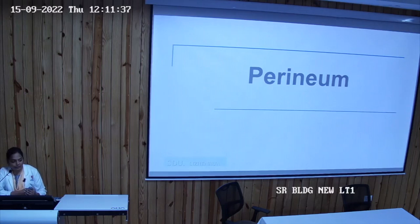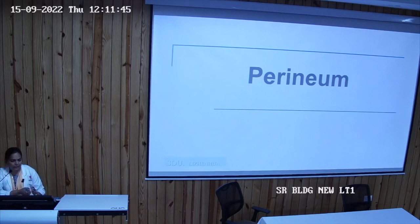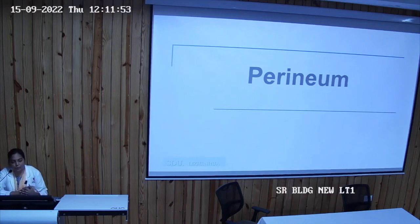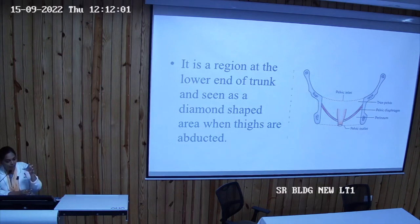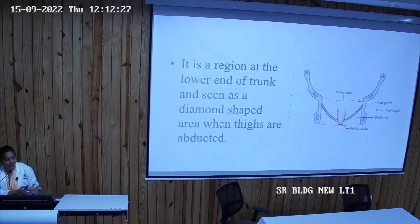Let's start with the topic of perineum. This is the lowermost part at the end of the trunk, just below the pelvic diaphragm. It is the diamond-shaped region at the lower end of the trunk.